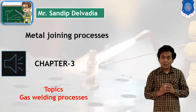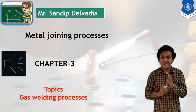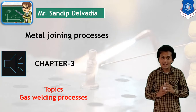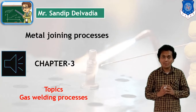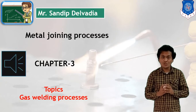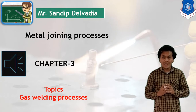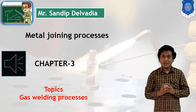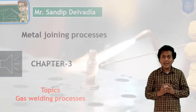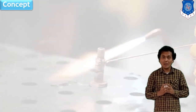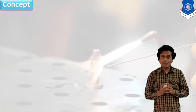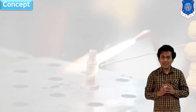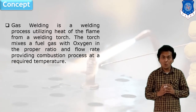In welding, our purpose is to generate heat and this heat can be utilized in joining of two metal plates. Heat generation is very important. We can generate heat with help of different mechanisms and concepts. In the gas welding process, as per the name, burning of gas is used. It means the burning heat of gas combustion will be utilized in joining of two plates.